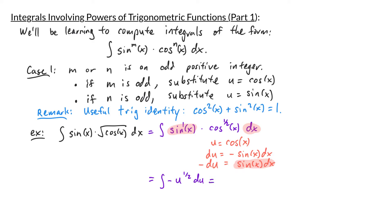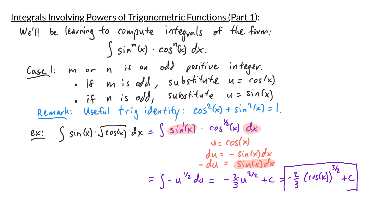We know how to find the antiderivative of that using the power rule. So this becomes negative two thirds times u to the power of three halves plus c. Then we substitute back in terms of x to get negative two thirds times cosine of x to the power of three halves plus c. And that's our final answer.